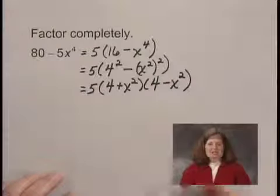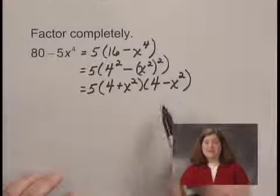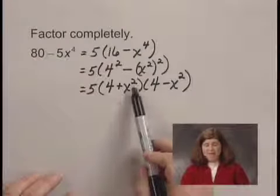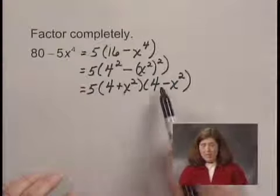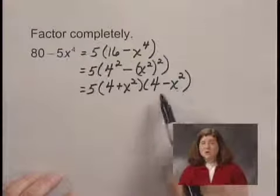Now I need to check each of these binomials to see if they can be factored further. 4 plus x squared is the sum of squares. I cannot factor that any further. 4 minus x squared is another difference of squares.